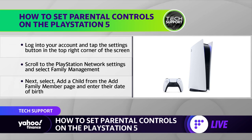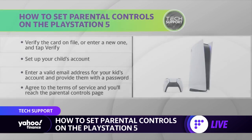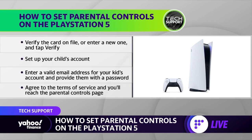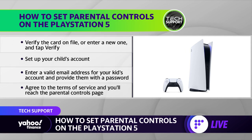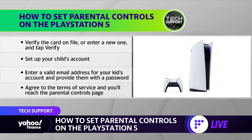From there, it'll take you to your Chrome browser for some reason — I don't know why it doesn't keep you in the app, but that's what Sony decided to do. You'll select Add a Child from the Add Family Member page, then enter their name. This is going to set up whether or not they're allowed to do things above 13, below 13, things along those lines.